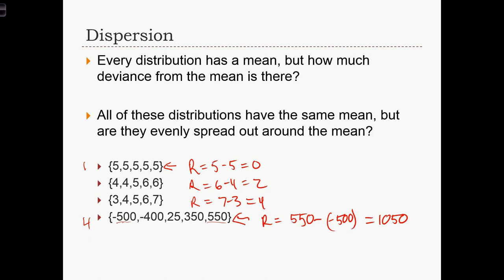So now we saw intuitively that the dispersion increases from set 1 to set 4. But now we can see in terms of range that quantifiably the dispersion is increasing as well.